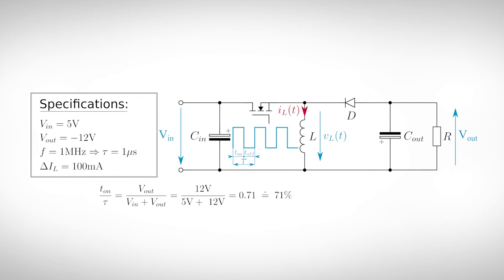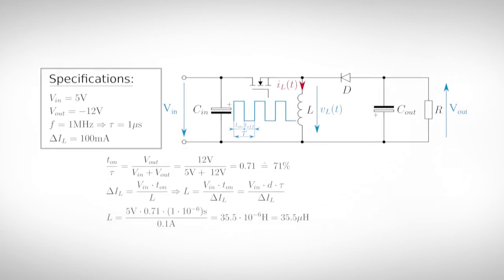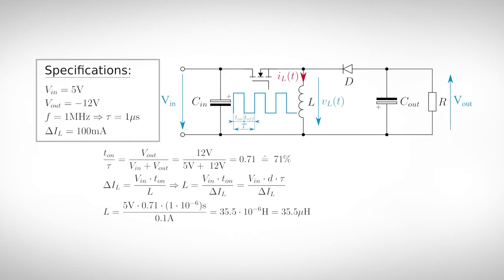The duty cycle can be calculated from the equation of the output voltage. For our example, we get the duty cycle of 0.71 or 71%. Now we can use our well-known formula for the inductor value and get the value of 35µH.